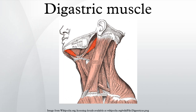The digastricus divides the anterior triangle of the neck into three smaller triangles. One: the submandibular triangle, also called the digastric triangle, bounded above by the lower border of the body of the mandible and a line drawn from its angle to the sternocleidomastoideus, below by the posterior belly of the digastricus and the stylohyoideus, and in front by the anterior belly of the digastricus. Two: the carotid triangle, bounded above by the posterior belly of the digastricus and stylohyoideus, behind by the sternocleidomastoideus, and below by the omohyoideus. Three: the suprahyoid or submental triangle, bounded laterally by the anterior belly of the digastricus, medially by the middle line of the neck from the hyoid bone to the symphysis menti, and inferiorly by the body of the hyoid bone.